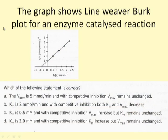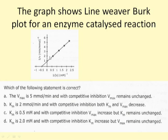A question shows a Lineweaver-Burk plot with only one line, with a y-intercept close to 1 and x-intercept at minus 0.5. Since the y-intercept is 1/Vmax, Vmax equals 1. Since the x-intercept is minus 1/Km, Km equals 2. Checking the options: Vmax is 5 is incorrect; Km is 2 and competitive inhibition decreases both Km and Vmax is incorrect; Km is 0.5 and Vmax increases is absurd. The correct answer is D: Km is 2 and with competitive inhibition Km increases but Vmax remains unchanged.